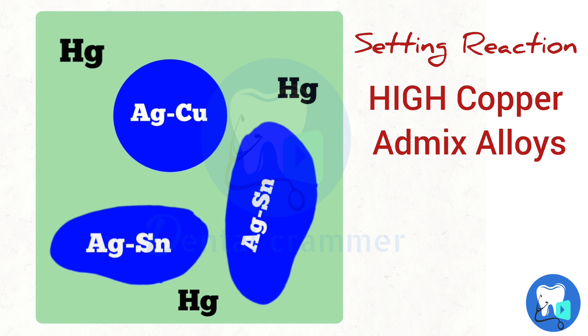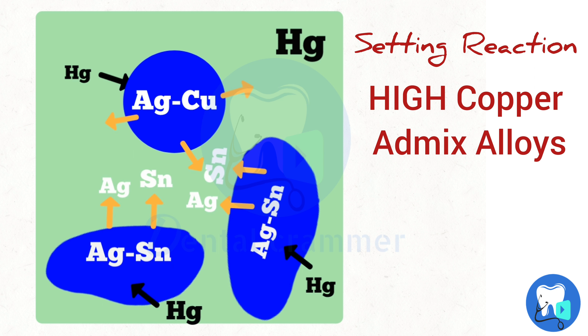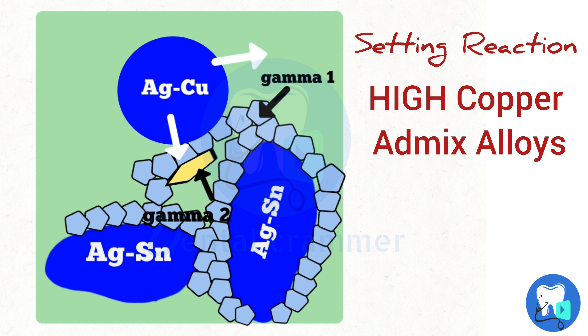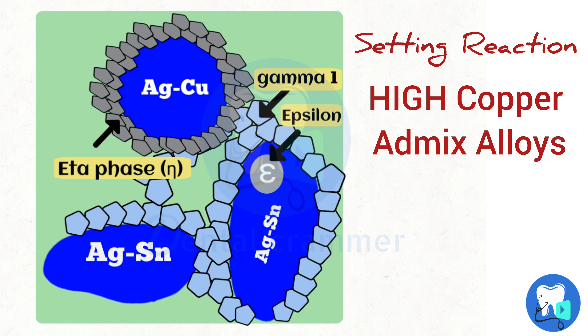Here is the animation showing the setting reaction of the high copper admix alloy. We have the silver copper eutectic alloy shown in the circle above. As the reaction occurs between the alloys and mercury, phases start to precipitate out — gamma 1 and gamma 2 phases appear. The gamma 2 phase then reacts with the silver copper alloy and is replaced by eta phase, so the silver copper alloy becomes surrounded by eta phase.